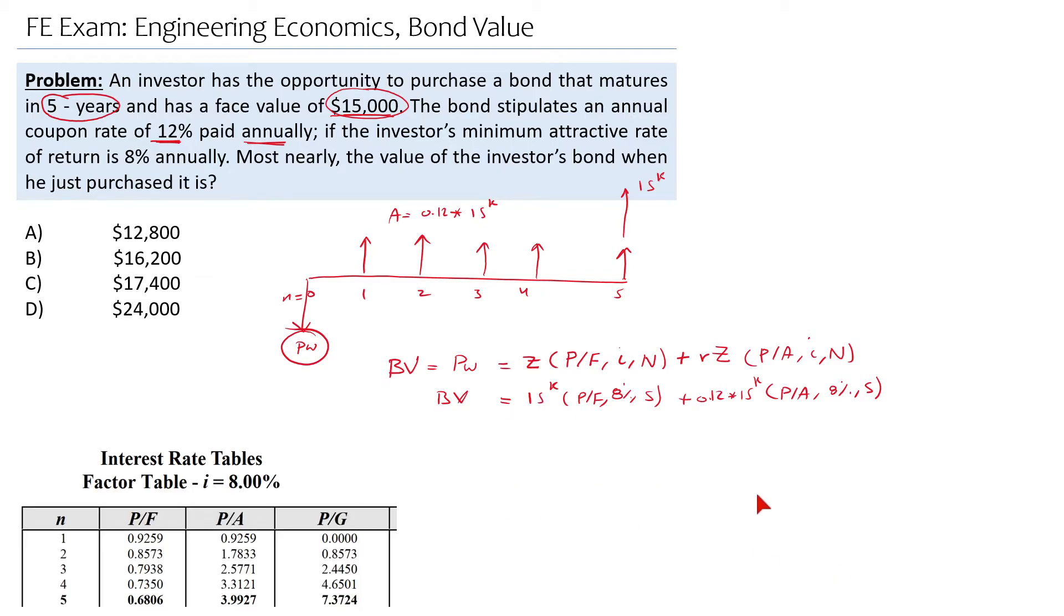We will find that (P/F) is basically 0.6806 and (P/A) for 5 years is 3.9927.